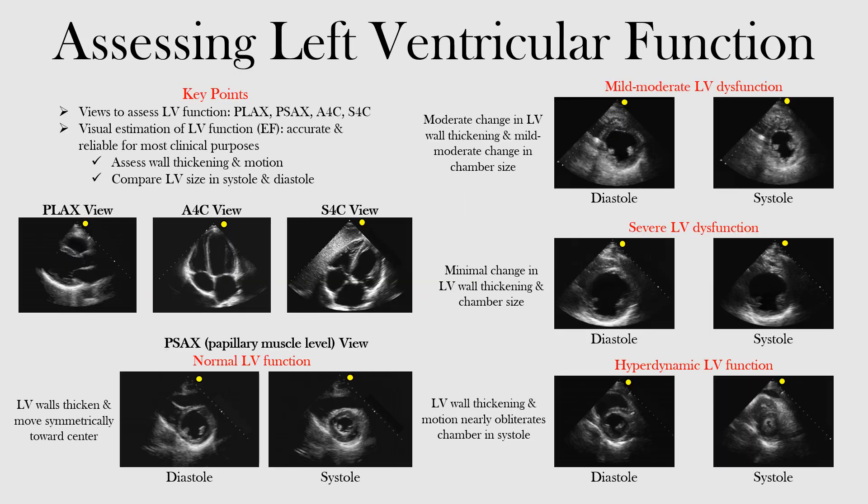Now we want to take a look at how we can assess left ventricular function at the bedside. There are a few ways we can do it, but ejection fraction — left ventricular ejection fraction — tends to be a surrogate marker for ventricular function. If it's depressed, it can suggest certain things. For example, if a prior echo shows a normal EF and the bedside echo shows it may have dropped, there may be evidence of ischemia or something else contributing. So let's look at which views we can use to assess left ventricular function.